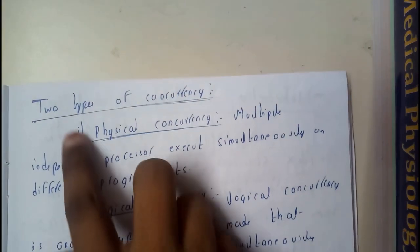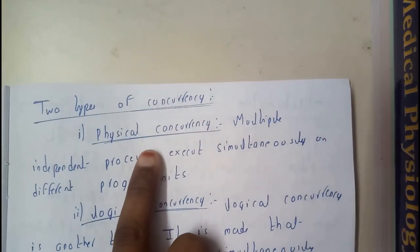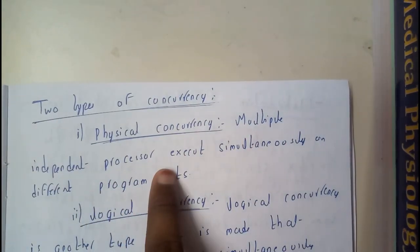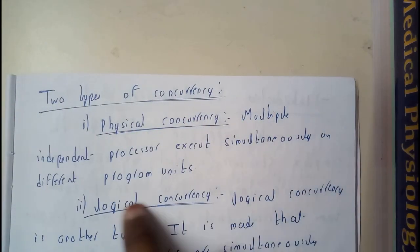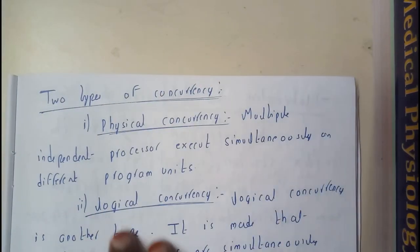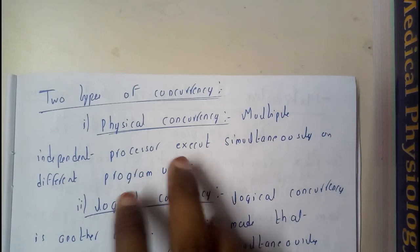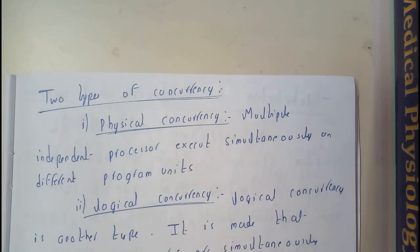Types of concurrency - there are two types majorly. Physical concurrency: Multiple independent processors execute simultaneously on different units of program. When they do on different units of program, this will be the situation.